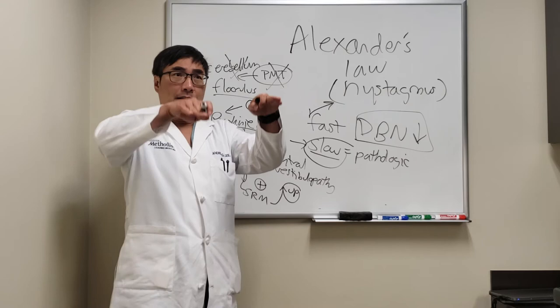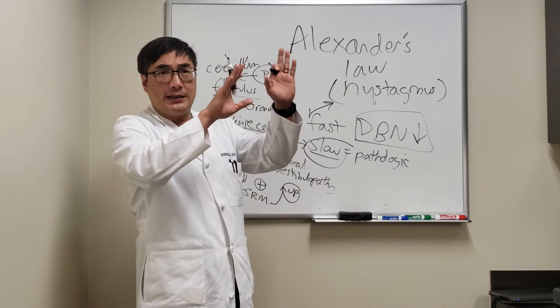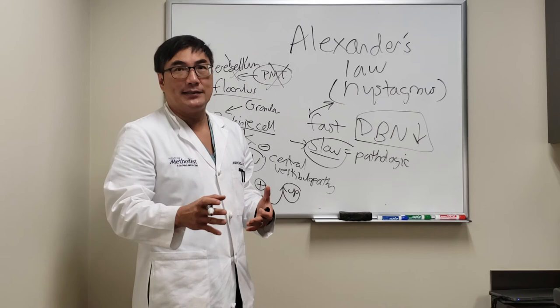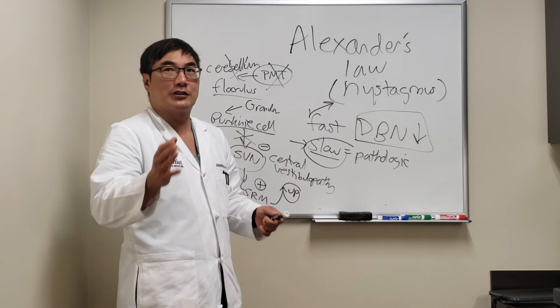It's the same for upbeat and up gaze and lateral gaze. If you're looking in the direction where the problem is, it'll be worse, and that's kind of a general rule for everything. You have a sixth nerve palsy, your diplopia is going to be worse when you try and look in the direction of the sixth nerve palsy.